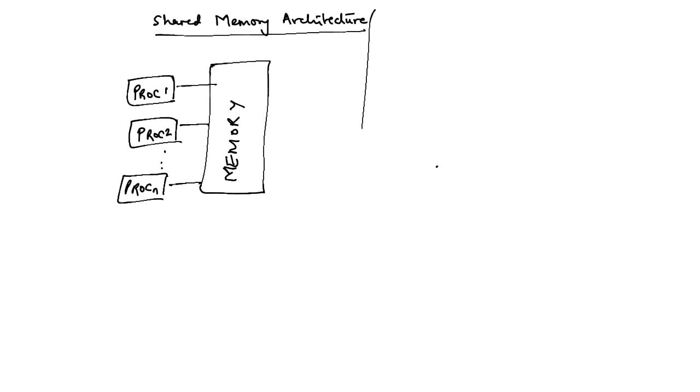This is the shared memory architecture and the other architecture that we commonly come across is the distributed memory architecture. What happens in the distributed memory architecture is that you have a processor with its own memory.